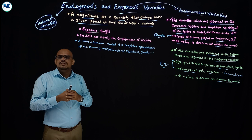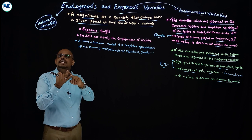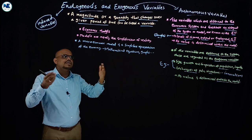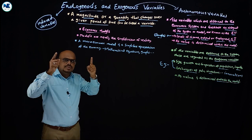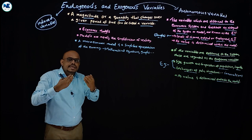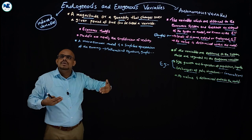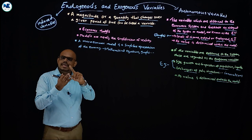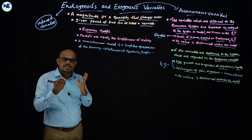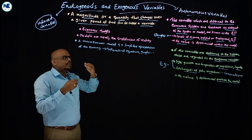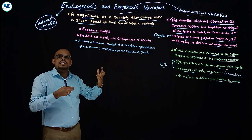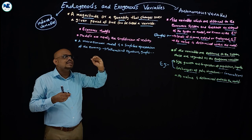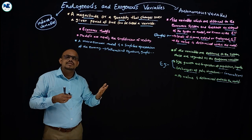For example, in a national income determination model, variables like saving, investment, consumption, and profit are all endogenous — they are integral parts of the model and their values are determined within it. But exports and imports are exogenous variables because their values are determined outside the system.